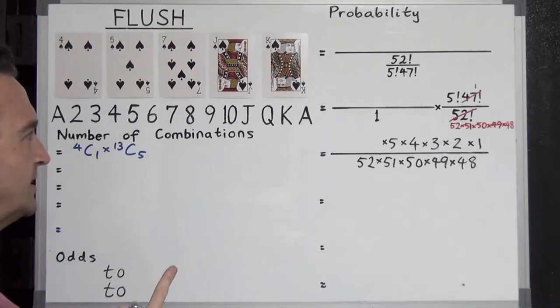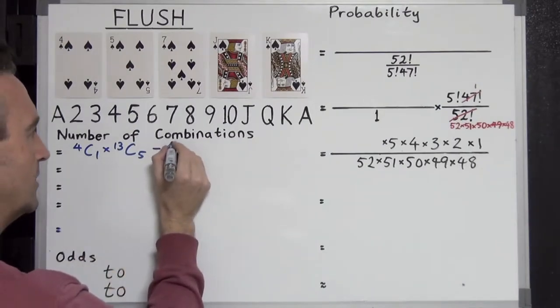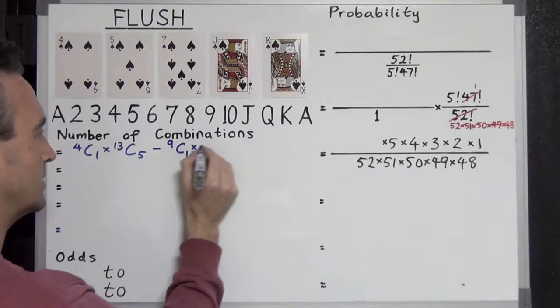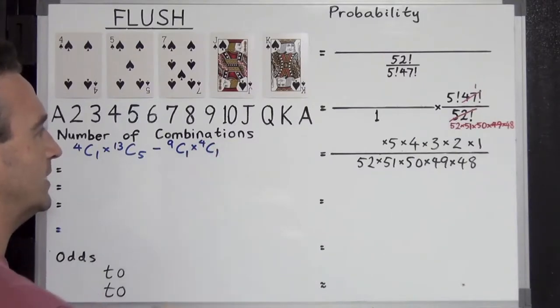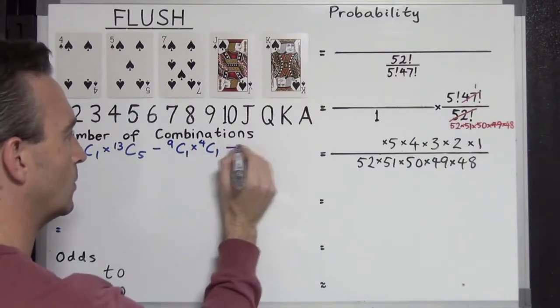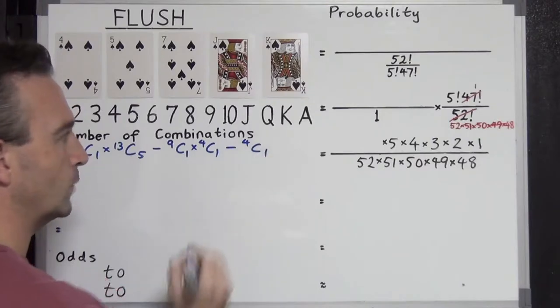If you watched our presentations, the number of straight flushes is 9C1 times 4C1 and the number of royal flushes is just 4. In other words, 4C1.